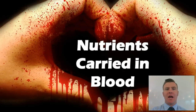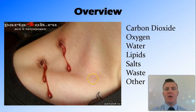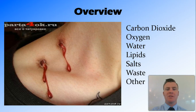In this video, we're going to look at dissolved nutrients and how they are carried in the blood. In particular, we're going to look at carbon dioxide, oxygen, water, lipids, salts, waste, and other things.